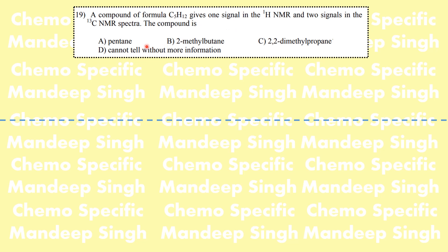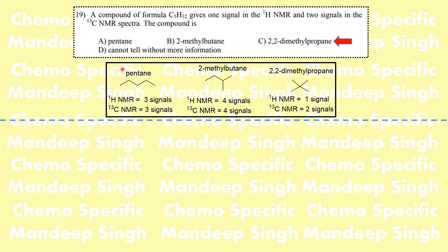The next problem was again based on NMR. The compound has molecular formula C5H11. Calculating the double bond equivalence gives zero — no unsaturation. The 1H NMR has one signal and the 13C NMR has two signals. For pentane we would see three signals; for 2-methylbutane, four signals in both 1H and 13C. For 2,2-dimethylpropane we see one signal in 1H NMR — for the four methyl groups — and two signals in 13C. So the correct option is C.